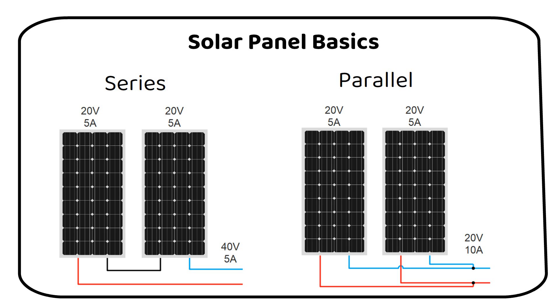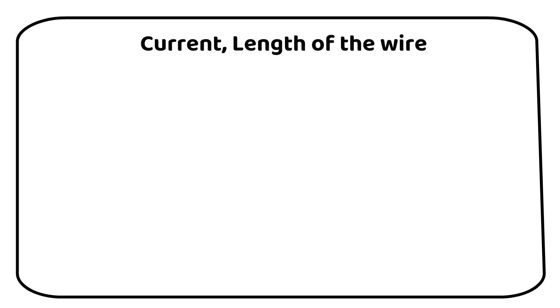Stick with me, because after this simple calculation, we will look at a more complicated 2 series, 2 parallel wiring diagram. Let's start with the basics of wire sizing by considering two key factors: the current and the length of the wire.